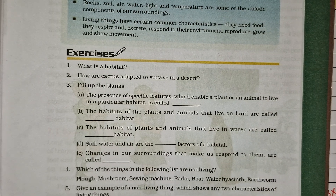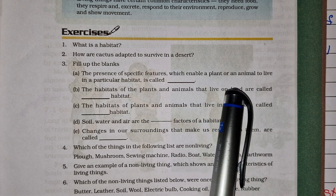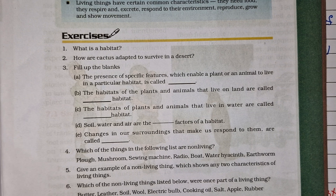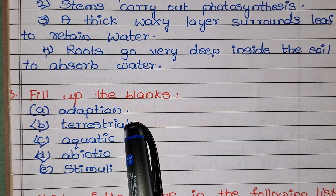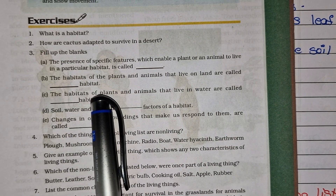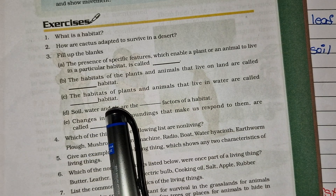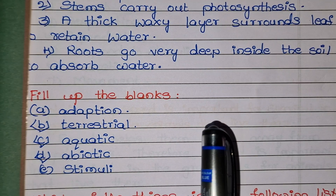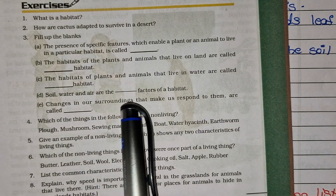Fill in the blanks. The first: the presence of specific features which enable a plant or animal to live in a particular habitat is called _____. The habitat of plants and animals that live in the water are called _____. The fourth one: soil, water and air are the _____ factors of the habitat.